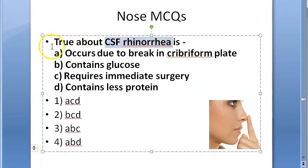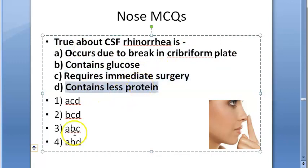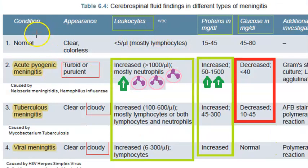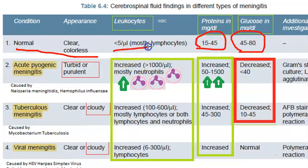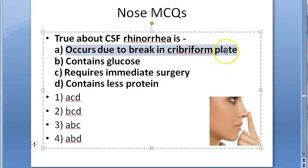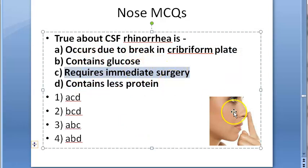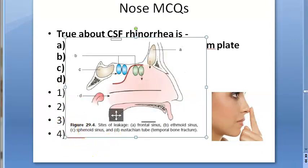True about CSF rhinorrhoea — it occurs due to a break in the cribriform plate, contains glucose, requires immediate surgery, or contains less protein. CSF normally is clear and colourless, it contains protein, it contains glucose, and it has WBCs — mostly lymphocytes. So CSF contains both glucose and protein. Looking at the cribriform plate, that is where the olfactory bulb passes through.